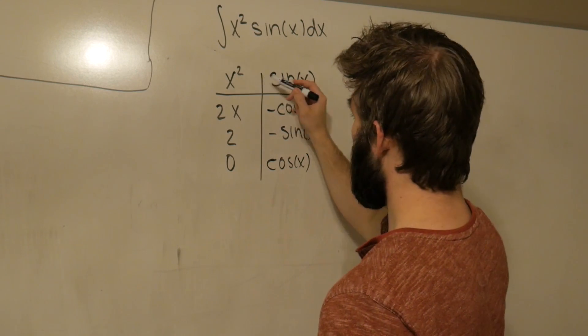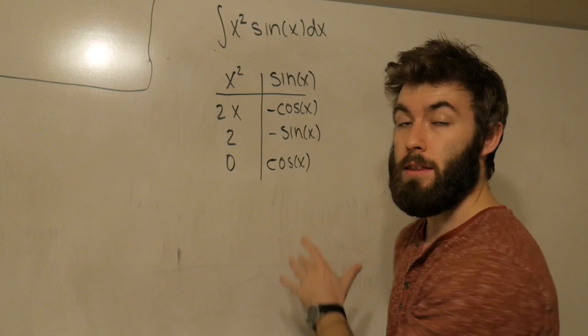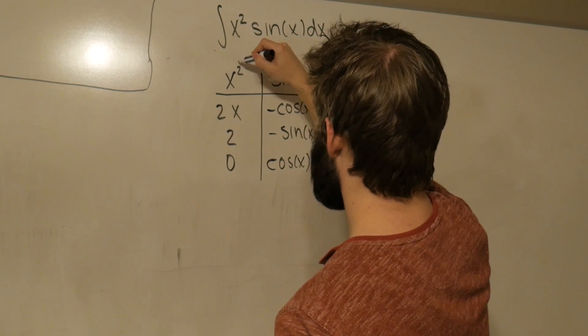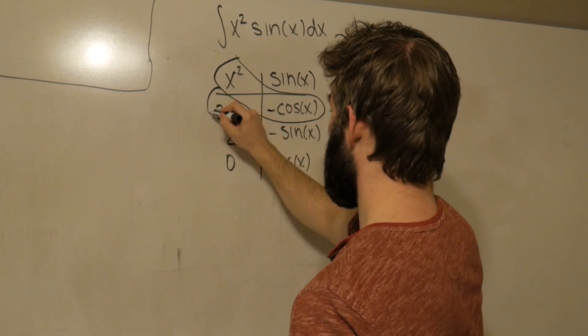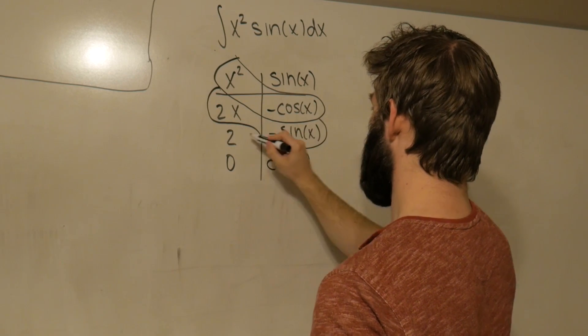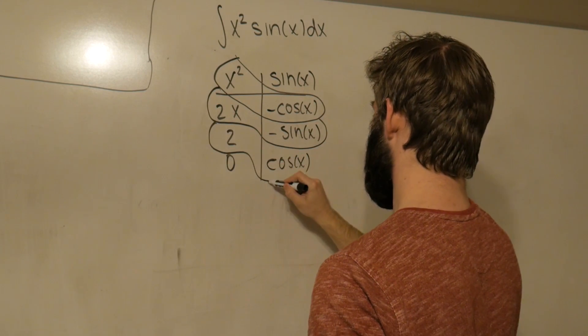And then what we're going to do is we're going to look at the diagonals here. We're going to group this with 1 over from this, 1 down and 1 over from this, this with 1 down and 1 over from this, and this 2 with cos(x).